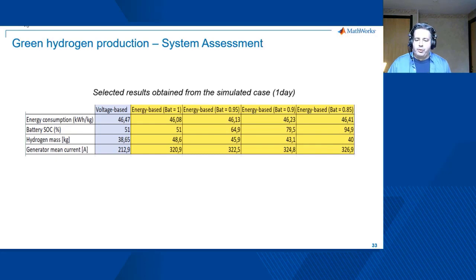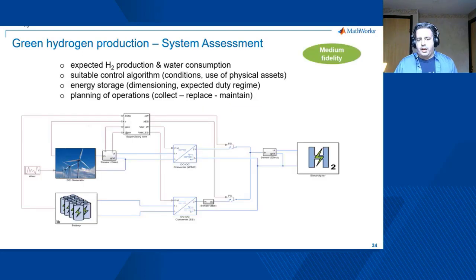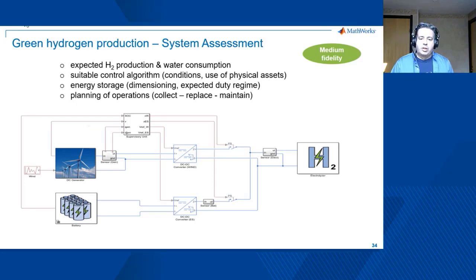A brief recap on simulation results: the energy-based method is more aggressive and allows us to produce more hydrogen, but the mean current in the generator is a lot higher, meaning the lifetime of the generator will be lower. To wrap up, key outputs from this type of analysis include expected hydrogen production, water consumption, the energy management solution that makes sense, how intensely you want to use the physical assets, and energy storage sizing — including the contribution and impact on hydrogen output.